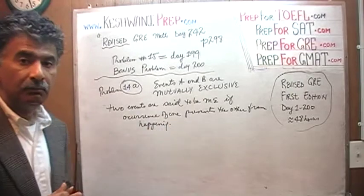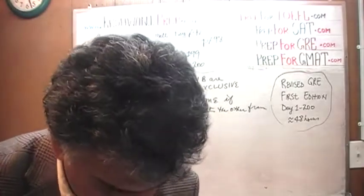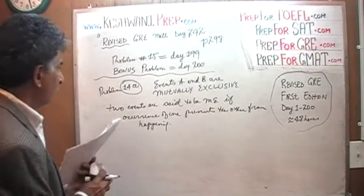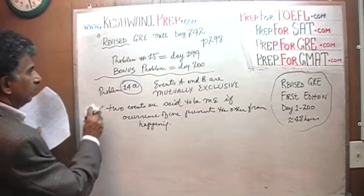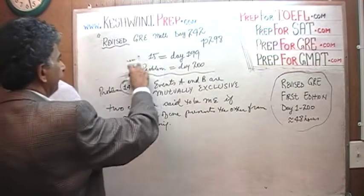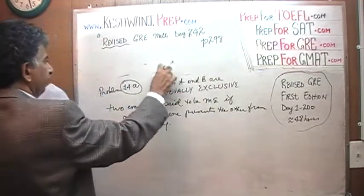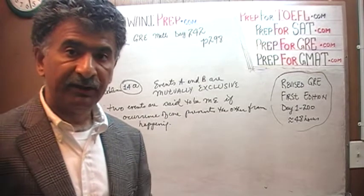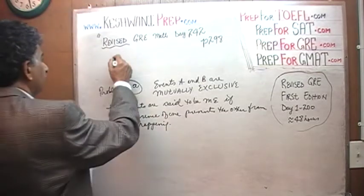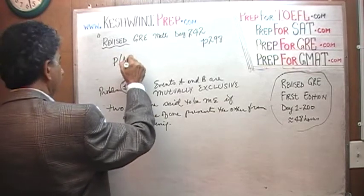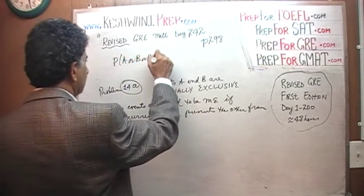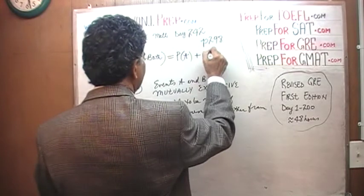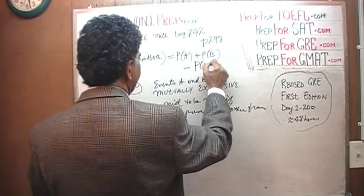We are told that these two events are mutually exclusive. The equation that we must memorize for the exam — the most fundamental equation in the study of probability — is: the probability of event A or B or both equals the probability of A plus the probability of B minus the probability of A and B.